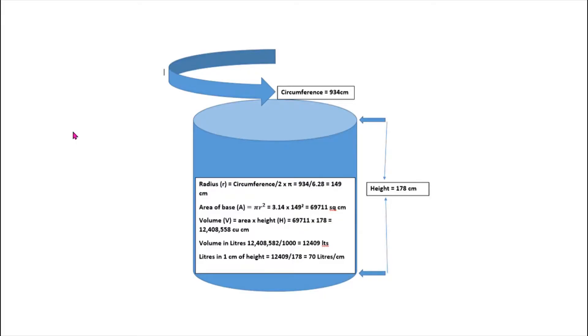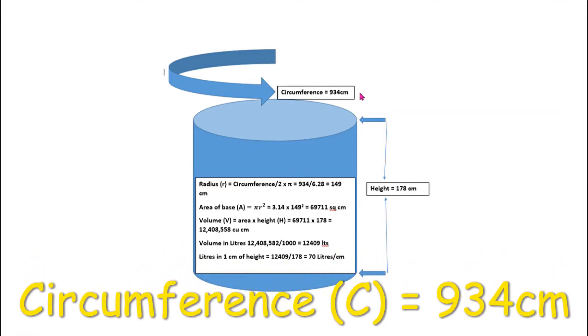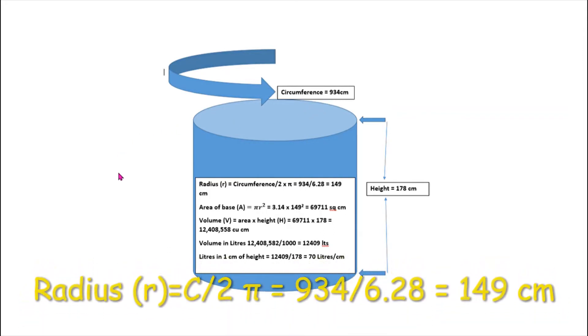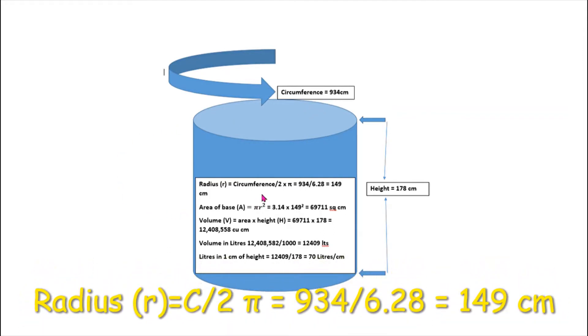Here we have a diagrammatic representation of the tank, and I'll just run through the calculations to get the volume. We measured the circumference, which was 934 centimeters. To get the radius, we use the formula circumference divided by 2π, and that comes to 149 centimeters.